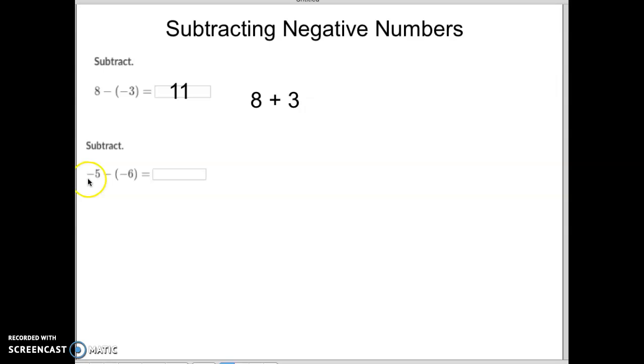Let's do the next one. Okay. We've got negative 5 minus negative 6. Well, we're going to change this into plus what? Positive 6. That's right. So negative 5 plus positive 6. So when we've got one negative and one positive and we're adding them together, the question becomes, what's bigger? Is the negative number bigger or is the positive number bigger?